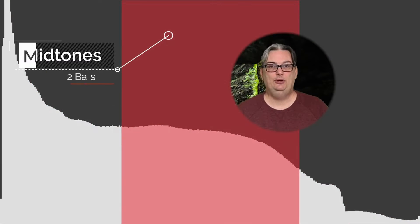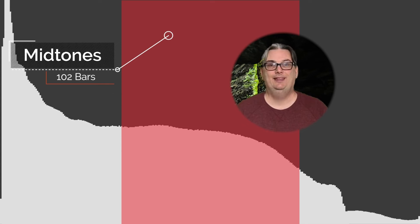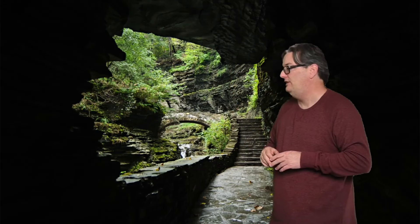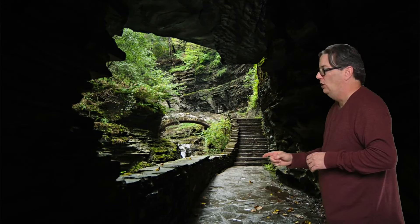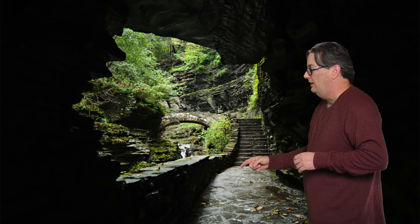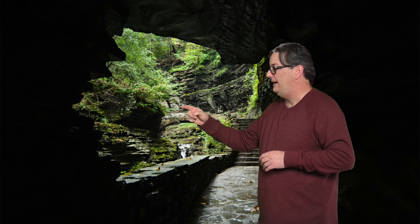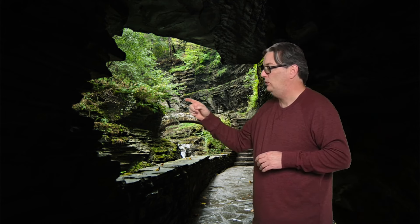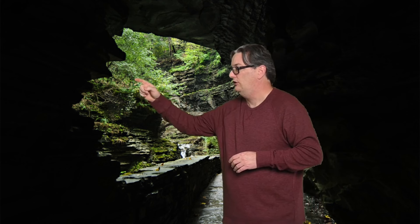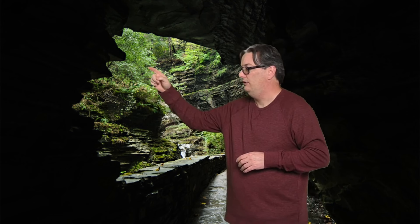Next, you have your mid-tones, which include a whopping 102 bars representing a large portion of mid-gray tones. These can be found along the path, along the steps, the railing, these rocks in the back — those are definitely mid-tones — as well as some of the darker greens up in the leaves and the trees. All of those are mid-tones.